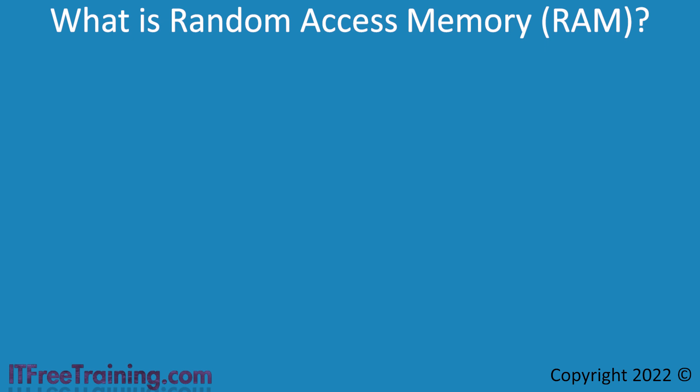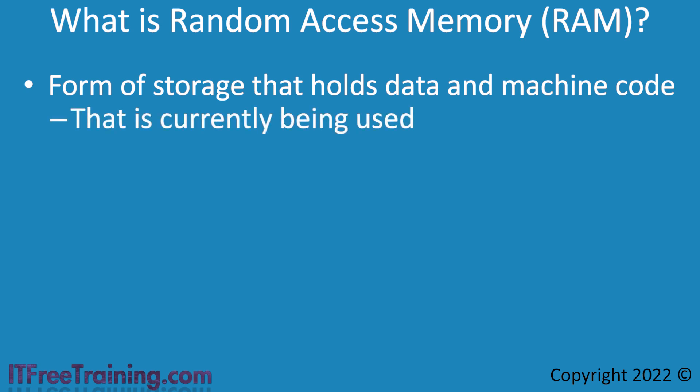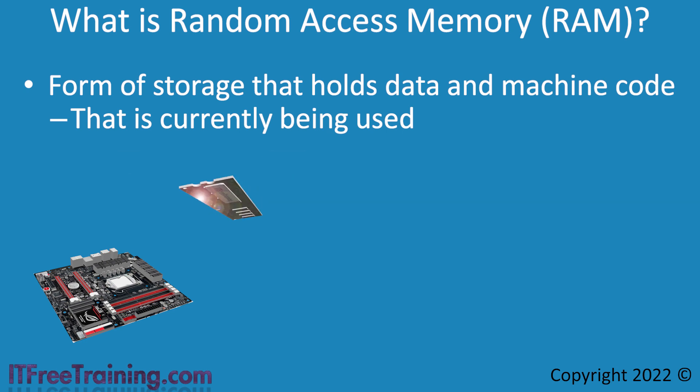RAM is essentially a form of storage that holds data and machine code. The difference from other types of storage is that RAM is currently in use by the computer and thus needs to be fast — by fast I mean the speed of RAM is measured in milliseconds. Inside your computer is a motherboard. The motherboard will contain one or more memory modules, also commonly referred to as memory sticks or sticks of RAM. These memory modules hold the data and software the computer needs to operate.